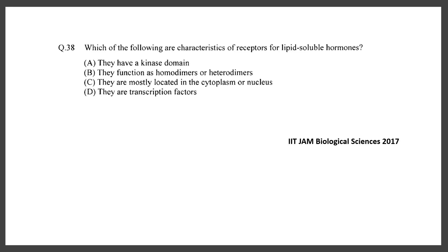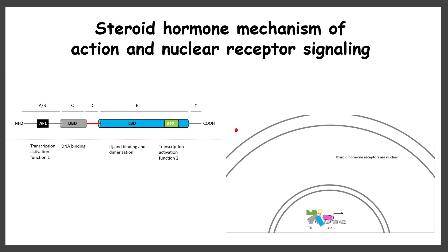In IIT JAM 2017 they asked an MSQ about characteristics of receptors for lipid-soluble hormones. The correct answers are B, C, and D. They function as homodimers or heterodimers — that is true. They are mostly located in the cytoplasm or nucleus — that is correct. They act as transcription factors.